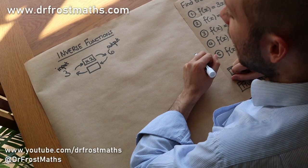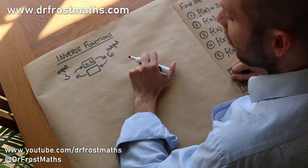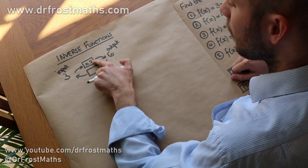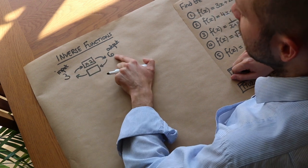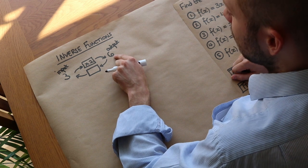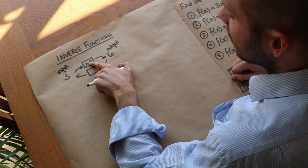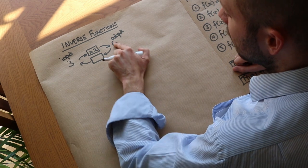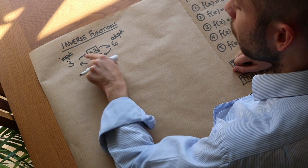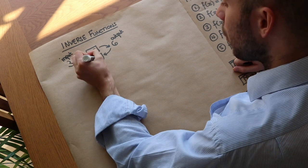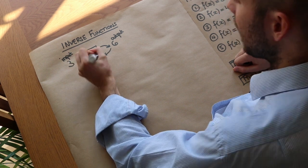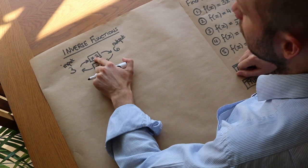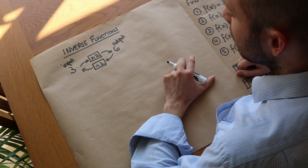Hello and welcome to this video on inverse functions. We've already come across the concept of a function — it's something that takes an input, does something to that input, and spits out an output. An inverse function is something that does the opposite of that function. How could we get back from an output of 6 to an input of 3? The opposite of times by 2 is divide by 2, which gets us back from 6 to 3. So the inverse function of multiplying by 2 is dividing by 2.